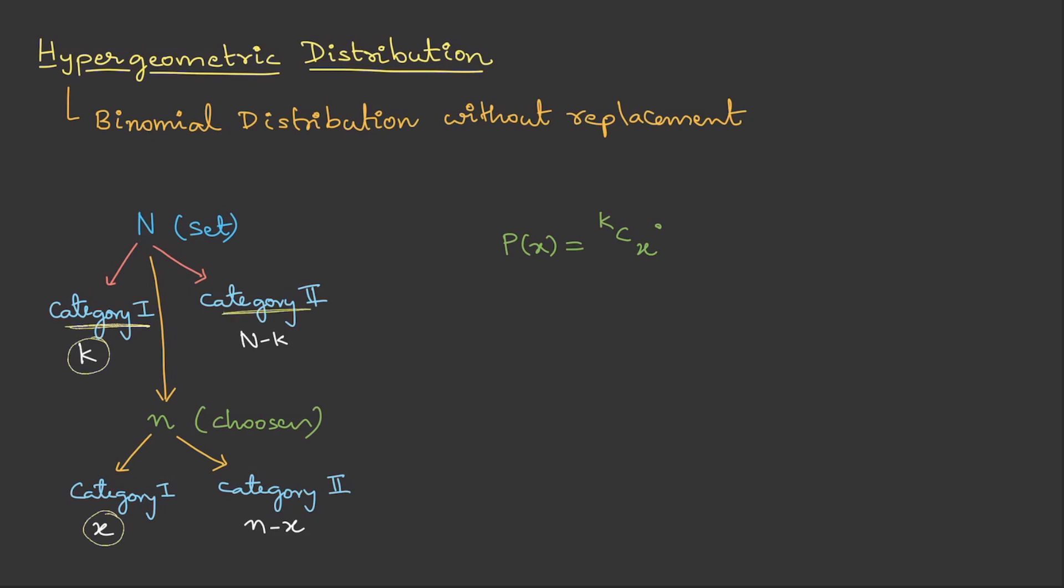now from category 2, that is from n minus k, we are selecting n minus x. So this could be written as n minus k C n minus x upon the total selection. From a set of n items, we are selecting this small n. Therefore, we can write this as n C n. This is the formula.